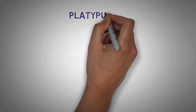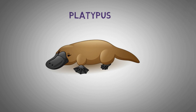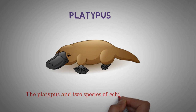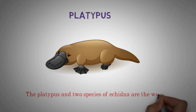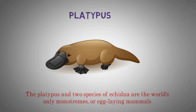Platypus. The platypus and two species of echidna are the world's only monotremes, or egg-laying mammals.